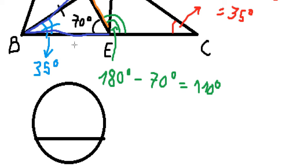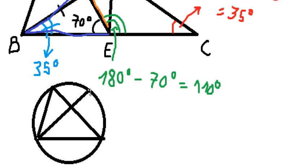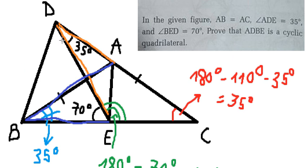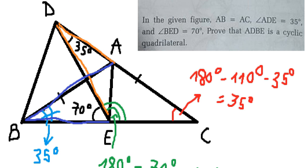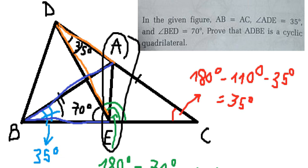We know that if two angles subtended by the same arc have the same value, then the four points lie on a circle. Since angle ADE and angle ABE are both 35 degrees and subtend the same chord AE, we can conclude that ADBE is a cyclic quadrilateral. This is the end — thank you for watching.